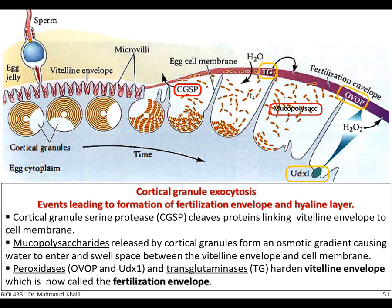Soon after, three important molecules — peroxidase, UDXI, OVO-P, and transglutaminase (TG) — are released and are very important for hardening the vitelline envelope. After hardening of this vitelline envelope, it has been transformed into the fertilization envelope, which prevents further entry of other sperms.